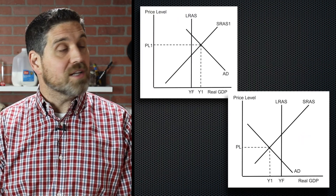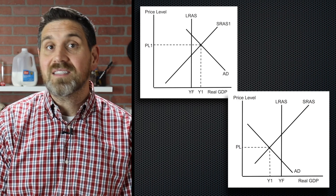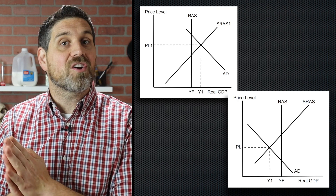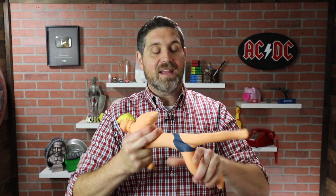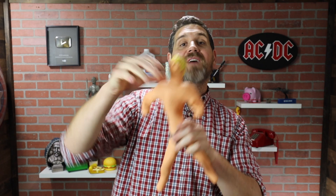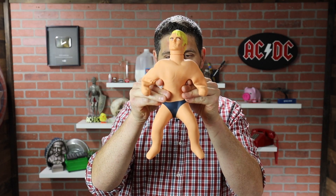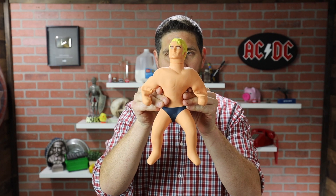For the rest of the unit, we're going to talk about government policies designed to fix the economy. But before we do that, let's talk about what happens when there's no policy — something called long run self-adjustment. In the short run, the economy can be in all sorts of places: it can have high unemployment, high inflation, stagflation. But eventually in the long run, the economy will self correct and end up right where it started at full employment.